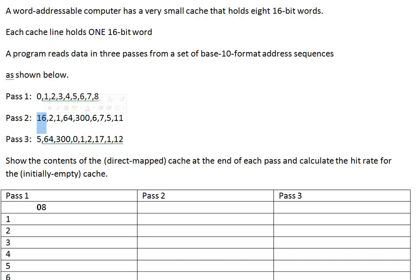Pass two. Block 16 goes into line 16 mod eight, which is zero — there's lots of competition for this first line unfortunately. Word two is a hit. Word one is in the cache, so that's a hit. Word 64: 64 mod eight is zero, so word 64 goes into block 64 and into line 64 mod eight — lots of competition for zero. I wish I had a first-in-first-out or least-recently-used algorithm, but it's direct map, so I keep evicting. Word 300 mod eight is four.